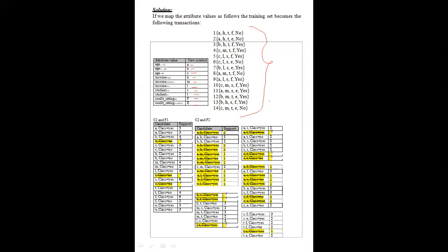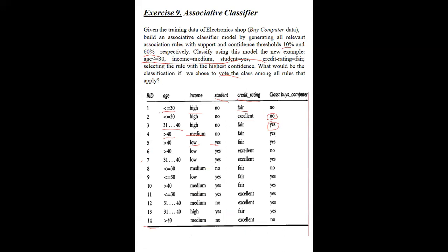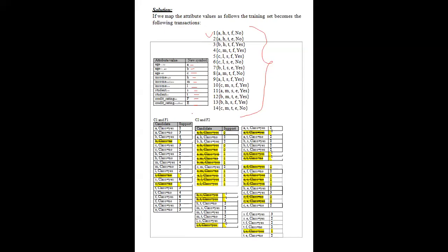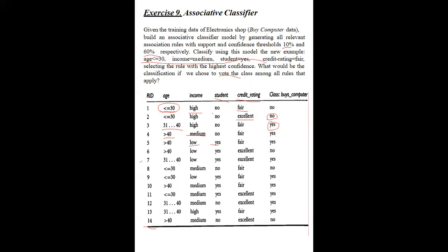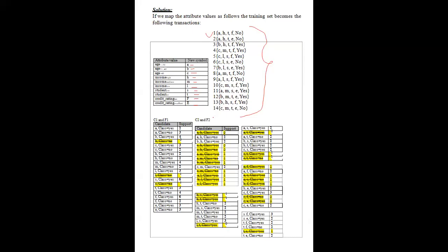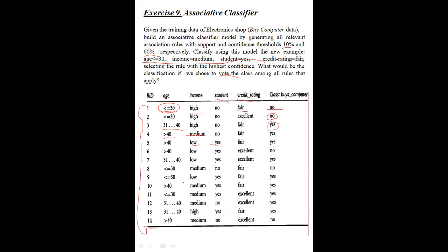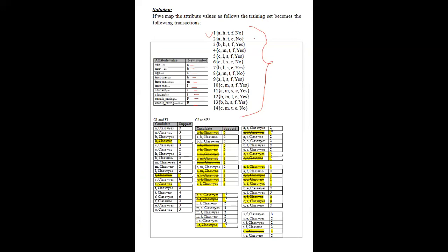After mapping attribute values with symbols, we get the transactional dataset. The next step converts this training dataset with symbols into the transactional dataset. For example, the first record of the training dataset — A, H, T, F, No — indicates: age is less than or equal to 30 (replaced by A), income is high (replaced by H), student is no (replaced by T), credit rating is fair (replaced by F), and class label is No. All 14 records are replaced with these symbols. We convert to transactional dataset because we want to apply the Apriori algorithm.